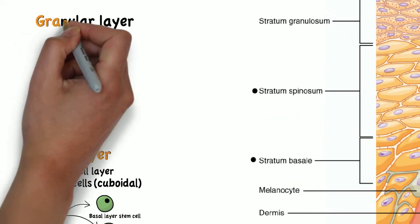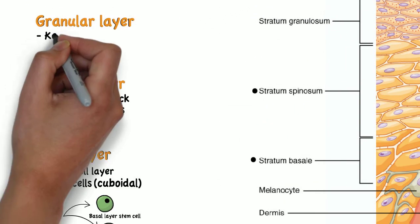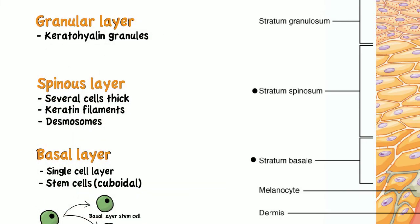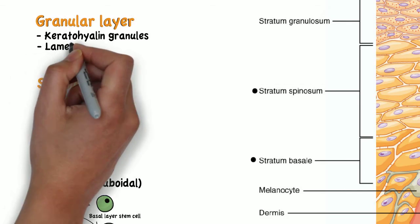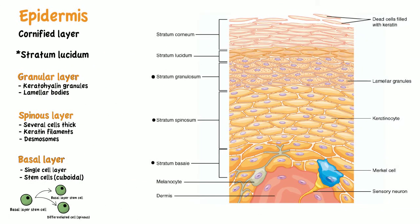In the granular layer, further differentiation occurs through the production of keratohyalin granules. These granules contain proteins that bind the keratin filaments together. Cells in this layer also produce lamellar bodies, which contain lipids important for the hydrophobic barrier to water.